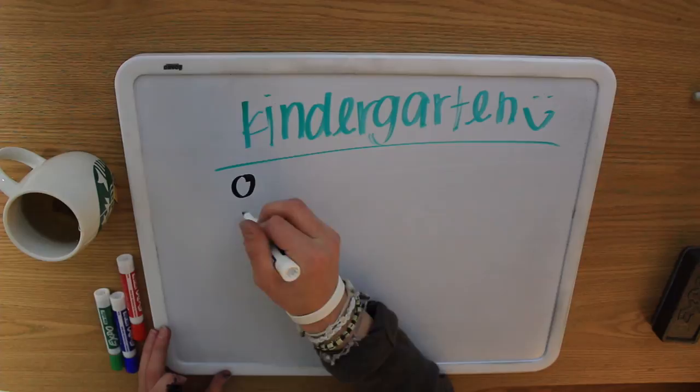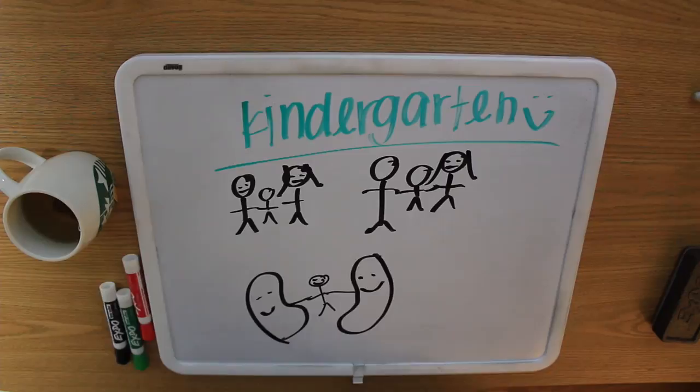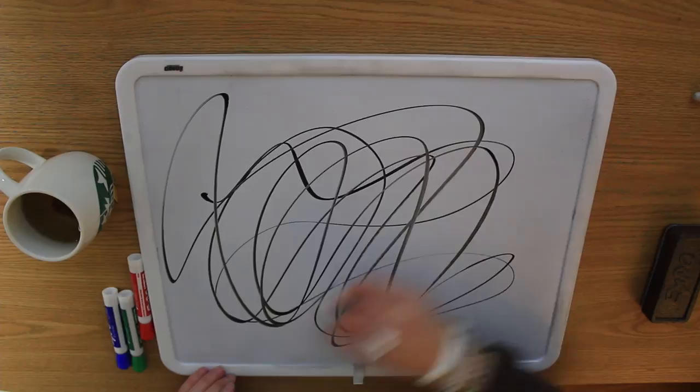When I got to kindergarten, walking in on the first day and seeing all these white kids with their straight parents was honestly kind of shocking, and I thought they were all kind of strange.